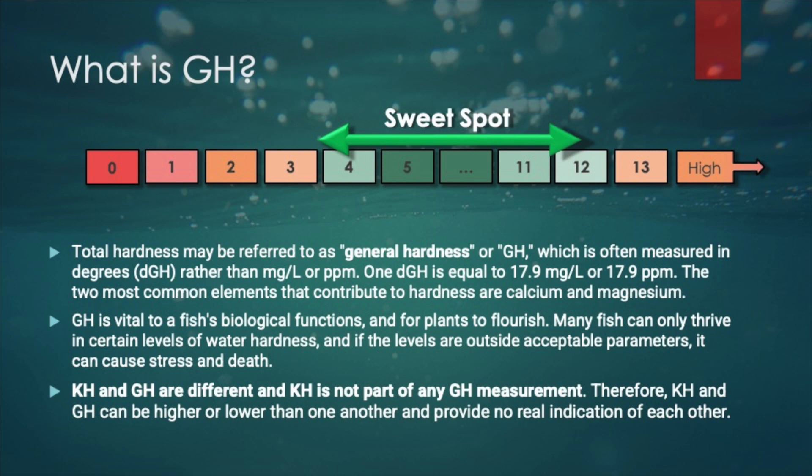All animals need some minerals, but certain fish like livebearers, goldfish, and African cichlids prefer higher gH levels. If you're trying to breed discus or other soft water fish, you may need to reduce the gH to 3 dGH or 50 ppm or below. If your tank or pond is heavily planted, it is advisable to run higher levels of gH when your inhabitants can deal with that, as plants flourish better at higher gH levels.